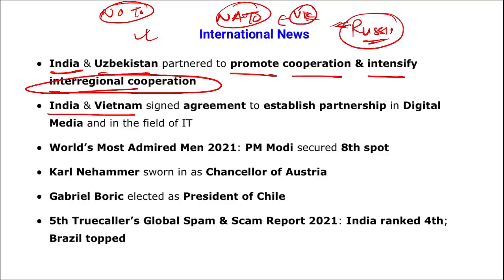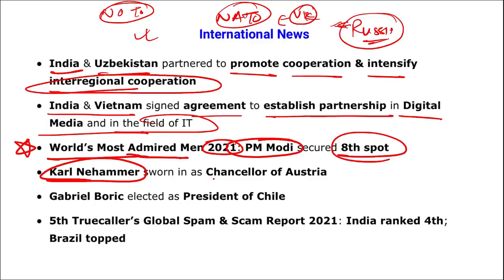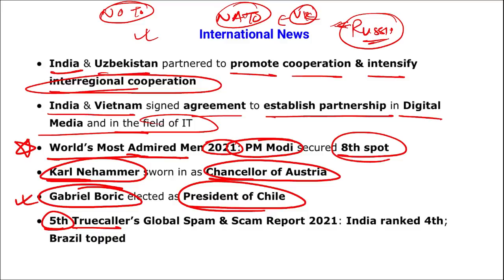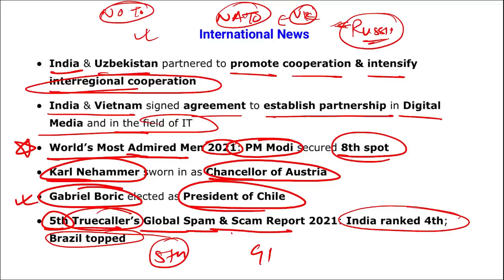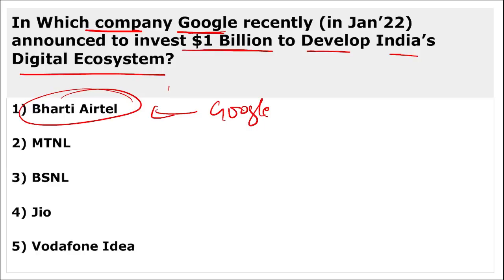The world's most admired man of 2021 — Prime Minister Narendra Modi secured the eighth spot. Karl Nehammer was sworn as Chancellor of Austria. Gabriel Boric was elected as President of Chile. In the fifth edition of the True Caller Global Spam and Scam Report 2021, India was ranked fourth and Brazil topped.